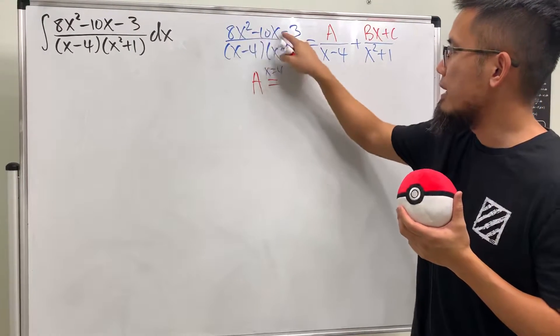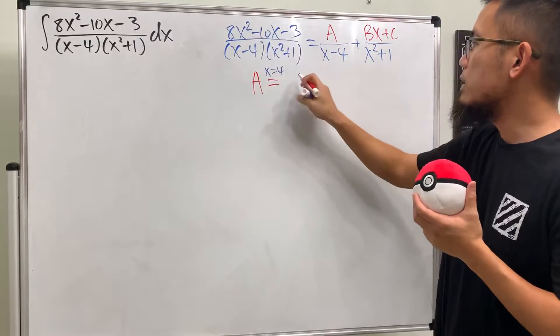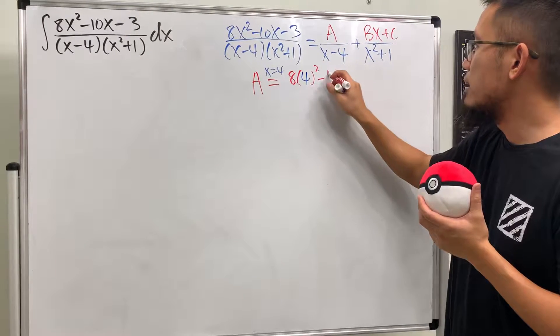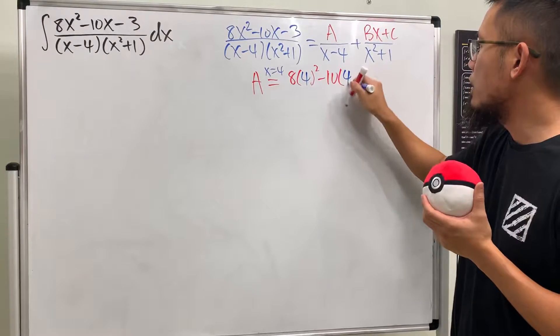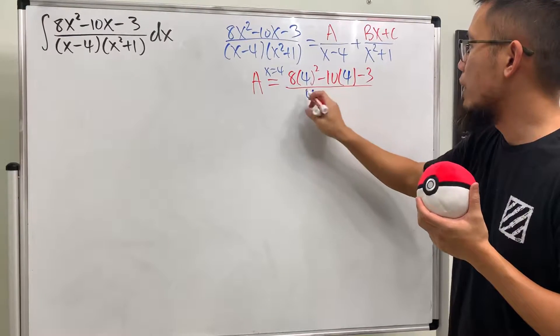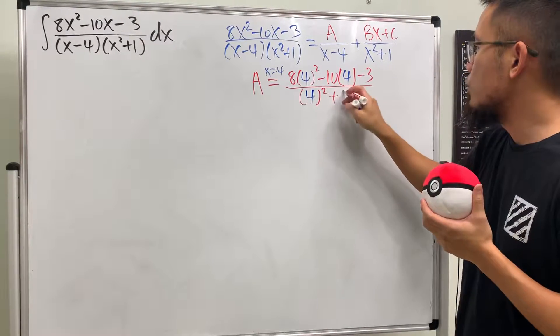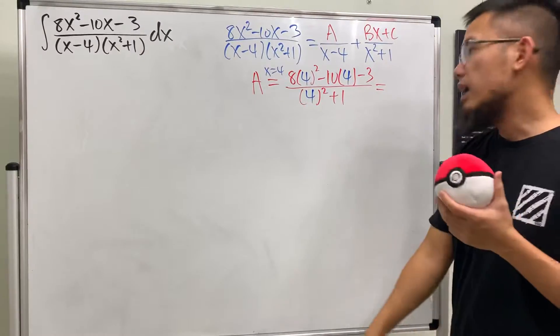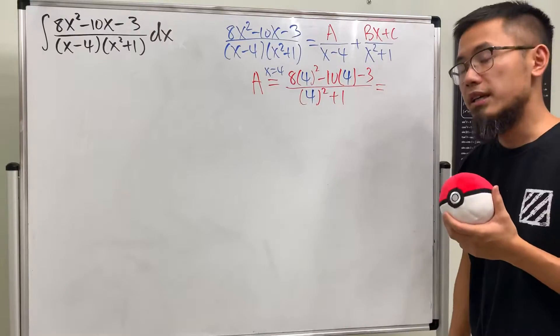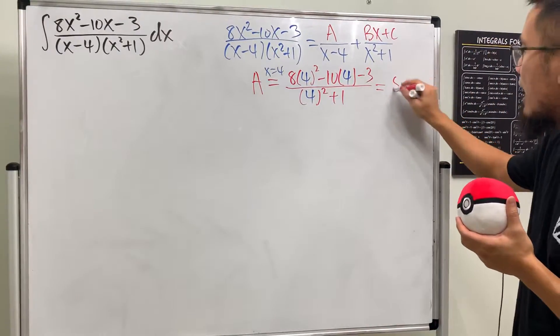When we do that we will have 8 times 4² minus 10 times 4 minus 3, all over 4² + 1. On the top if you work this out you'll get 85, on the bottom you'll get 17, divide you will get 5.